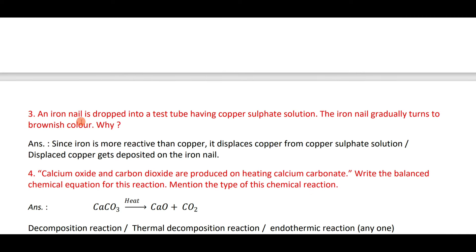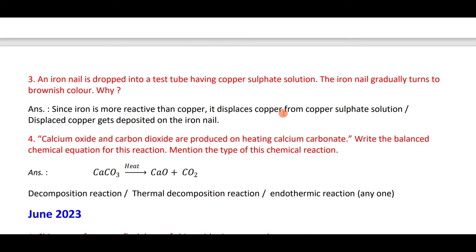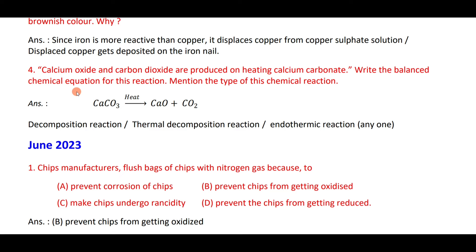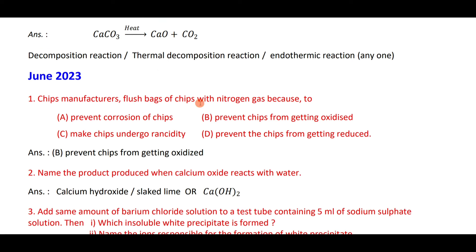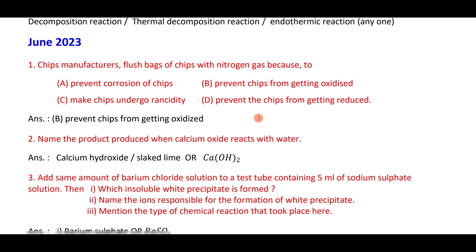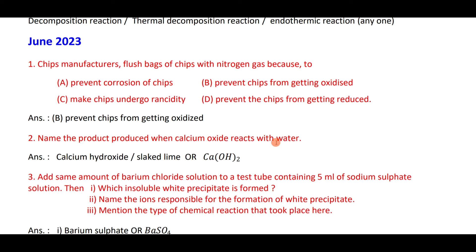An iron nail dipped in copper sulfate solution gradually turns brownish because iron is more reactive than copper and displaces copper from the solution. CaCO₃ on heating gives CaO plus CO₂. Chips manufacturers flush bags with nitrogen gas to prevent oxidation. The product when calcium oxide reacts with water is calcium hydroxide or slaked lime — Ca(OH)₂.